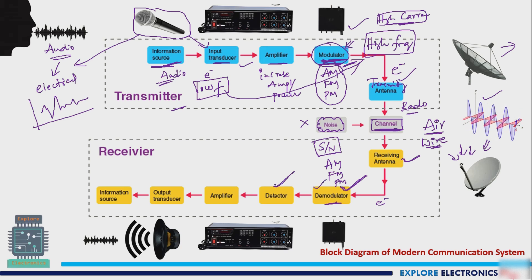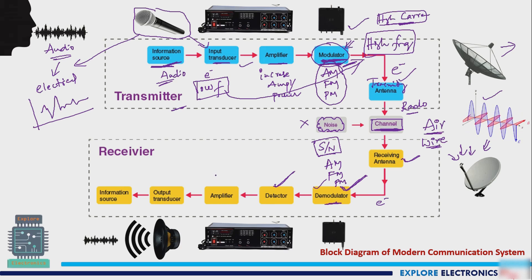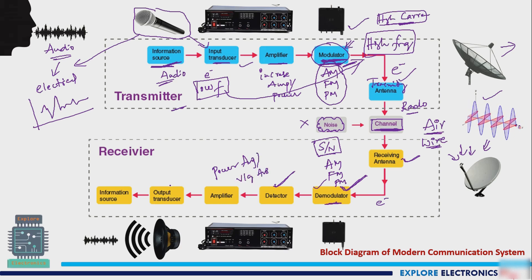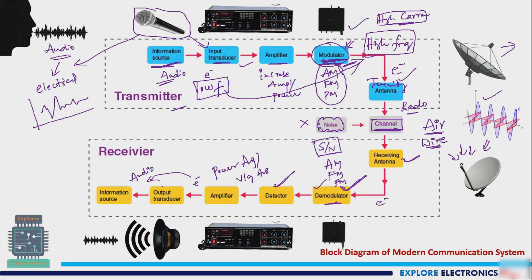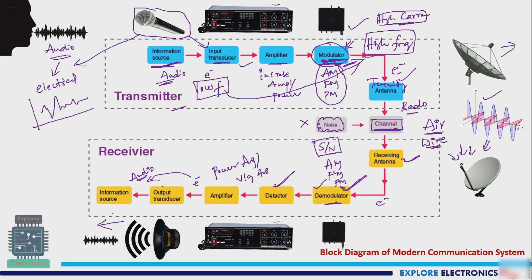The detector is part of the demodulator. Then again we have an amplifier — a power amplifier or voltage amplifier — to increase the strength of the signal. After that, the electrical signal is given to a transducer, which converts it back to audio or the type of information we originally sent. This audio is given to the speaker so we can hear the same audio that was sent from the transmitter.